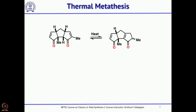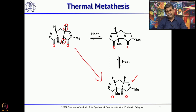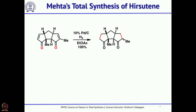You take this dienedione and heat it. Basically, what he wants is for these two hydrogens to be alpha. He could do this using thermal conditions — when you heat it, the double bond migrates, and with further heating it isomerizes to a more stable triquinone. By heating it for a long time, you could convert this into the desired tricyclic compound. He then took it and reduced both double bonds to get the corresponding diketone.